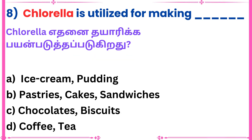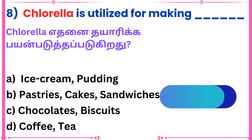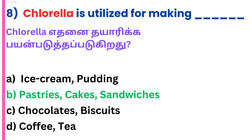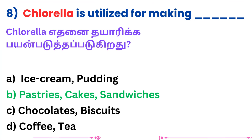Eighth question: Chlorella is utilized for making what? Answer: Pastries, cakes and sandwiches.